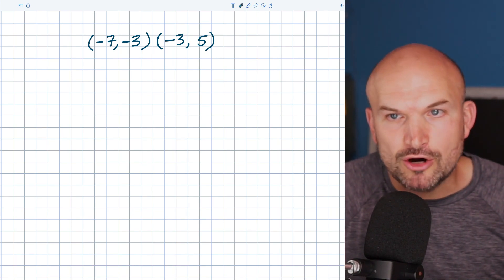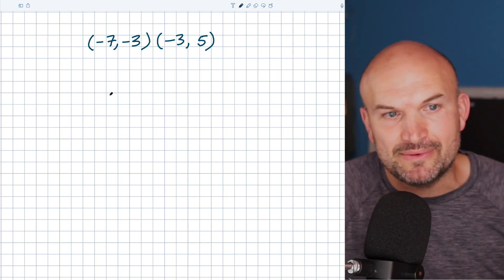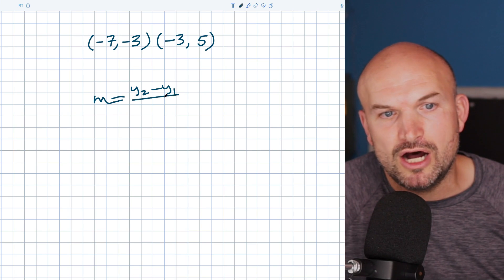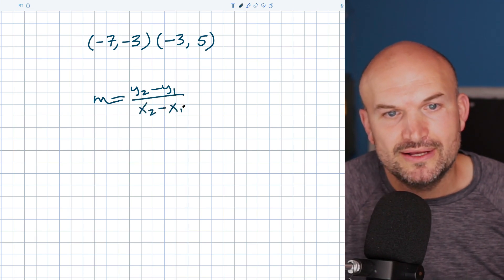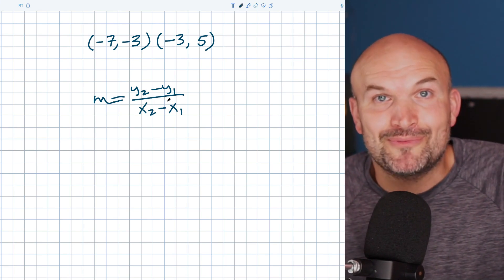The problem with the formula of slope is that it has subtraction in the numerator as well as subtraction in the denominator. So M is equal to Y2 minus Y1 all over X2 minus X1. Now, that's not horrible, right? Because subtraction is not the worst operation in the world.